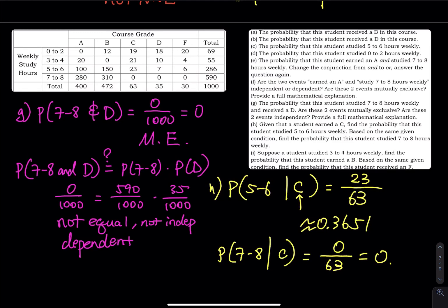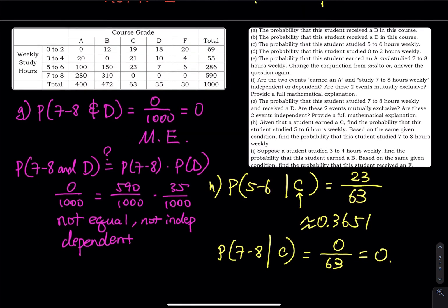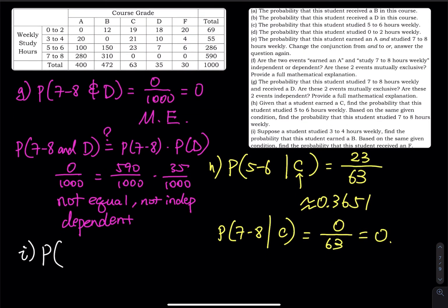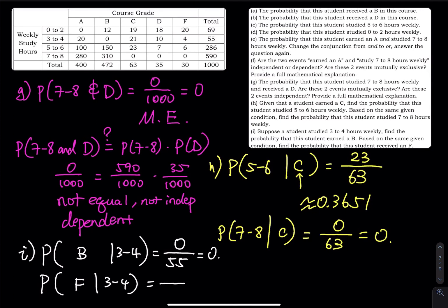Part I: Given that a student studies 3 to 4 hours, find the probability of earning a B. Row 2 has a total of 55. Within row 2, there are 0 Bs. So that probability equals 0. Also find P(F | 3 to 4). We are locked in row 2, which has a total of 55. Within row 2, the value corresponding to F is 4. So 4 divided by 55 ≈ 0.0727.